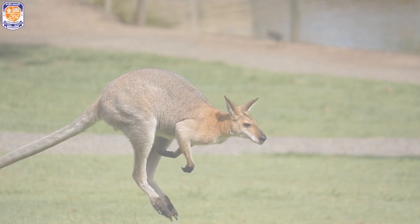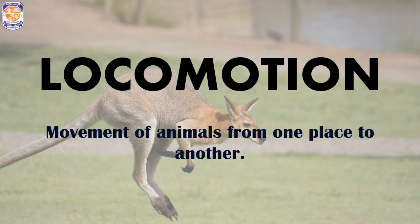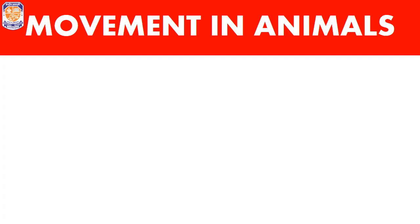Moving any part of the body while sitting at one place is known as movement. But when an animal changes its place and moves from one place to another, it is known as locomotion.